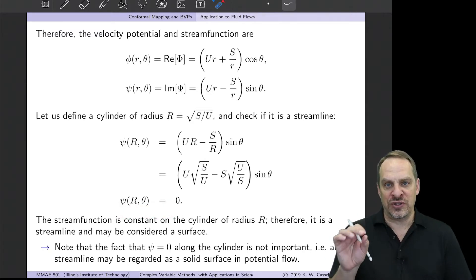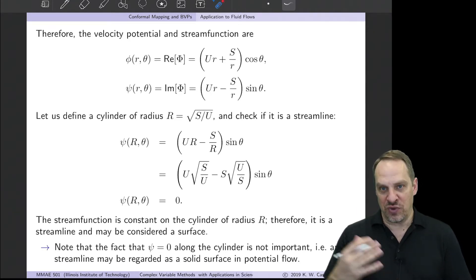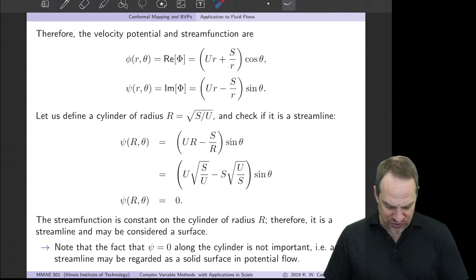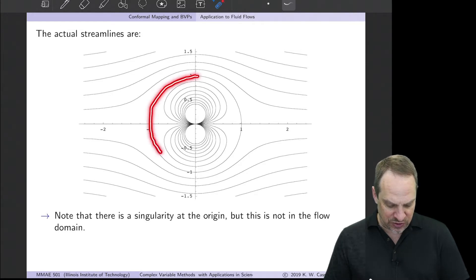As long as we have a streamline where the stream function equals a constant in the shape that we want, in this case a circular cylinder, then we can regard this as the flow around that circular cylinder. So here are the streamlines plotted. You'll notice here is that ψ = 0 streamline, and it's a perfect circle centered at the origin.